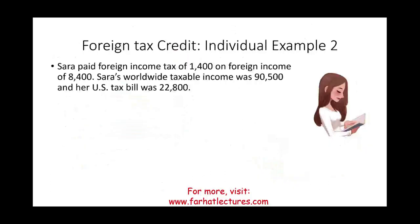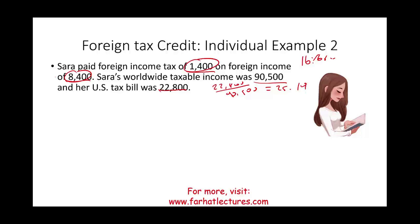Let's take a look at another example. Sarah paid foreign income tax of $1,400 on her foreign income of $8,400. Quick computation: $1,400 divided by $8,400 means Sarah is paying approximately 16.67% in foreign taxes. Sarah's worldwide taxable income was $90,500, and her US tax bill was $22,800. Dividing $22,800 by $90,500 gives approximately 25.19% — her US effective tax rate is higher.